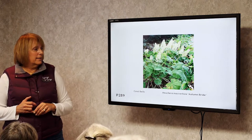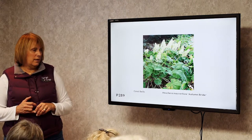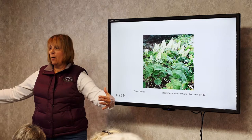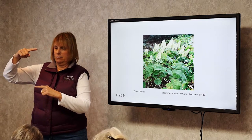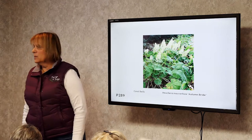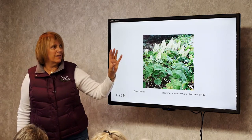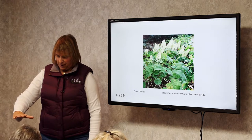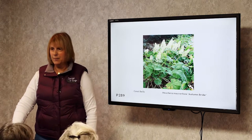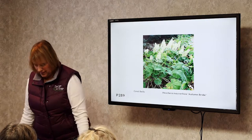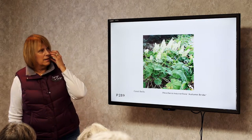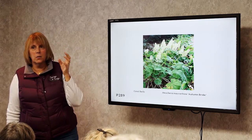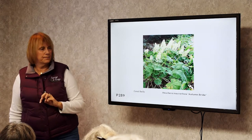This is another Heuchera — Autumn Bride. It gets very large and blooms in the fall, actually blooming a little in spring with its main blooming time in August into September. With the flowers it's quite tall. A really pretty plant — you need a lot of room for one. I had it in full sun, but I'd suggest part sun with a little moist, regular soil.